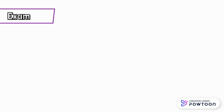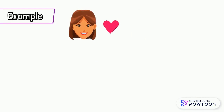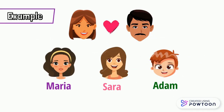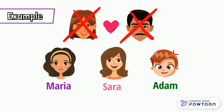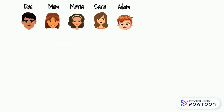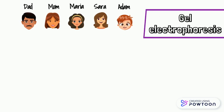For a better understanding, here is the story of a lovely couple. They have two beautiful daughters named Maria and Sarah, and a handsome son named Adam. After the couple died due to a car crash, the children have been informed that one of them is adopted. Now, let us find out who the adopted child is.